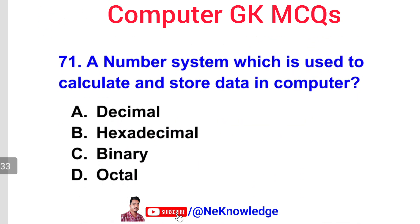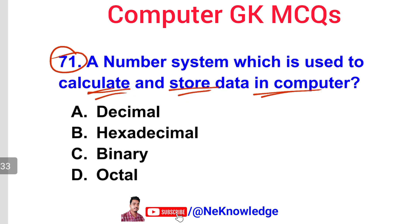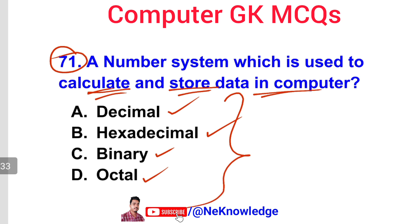Question number 71 is the last question in this part. The question asks: which number system is used to calculate and store data in a computer? Options include decimal, hexadecimal, binary, and octal. The correct answer — please comment in the comment box — will be revealed in the next part.